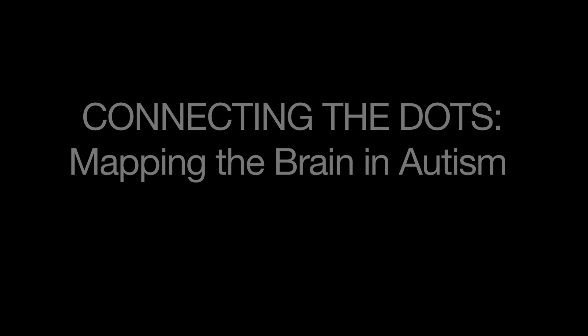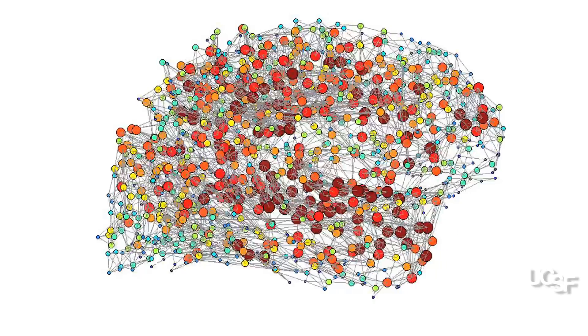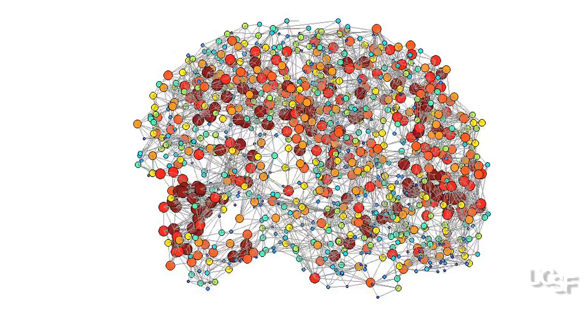The brain is an almost incomprehensible maze of long cells called neurons, a hundred billion of them in all, each one making up to 10,000 connections with other neurons.